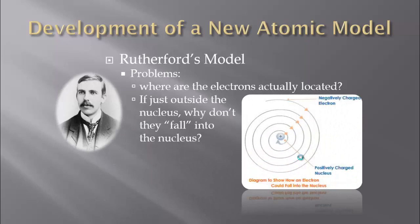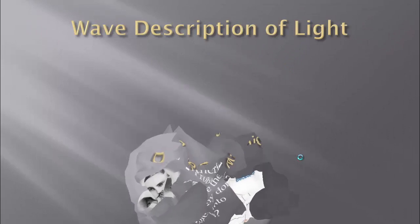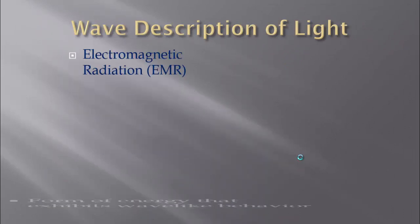Plus, if the middle is positive and the outside is negative, well what do we know about charges? Opposites attract. So why don't these negative electrons just fall back into the nucleus? To help explain what happens and why the electrons stay out there, we are going to look at the study of light.